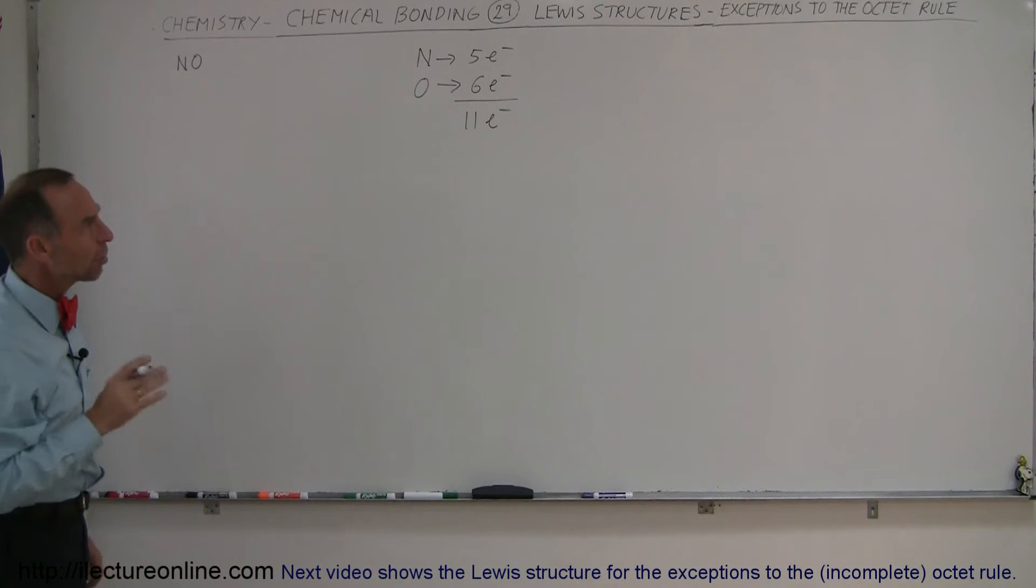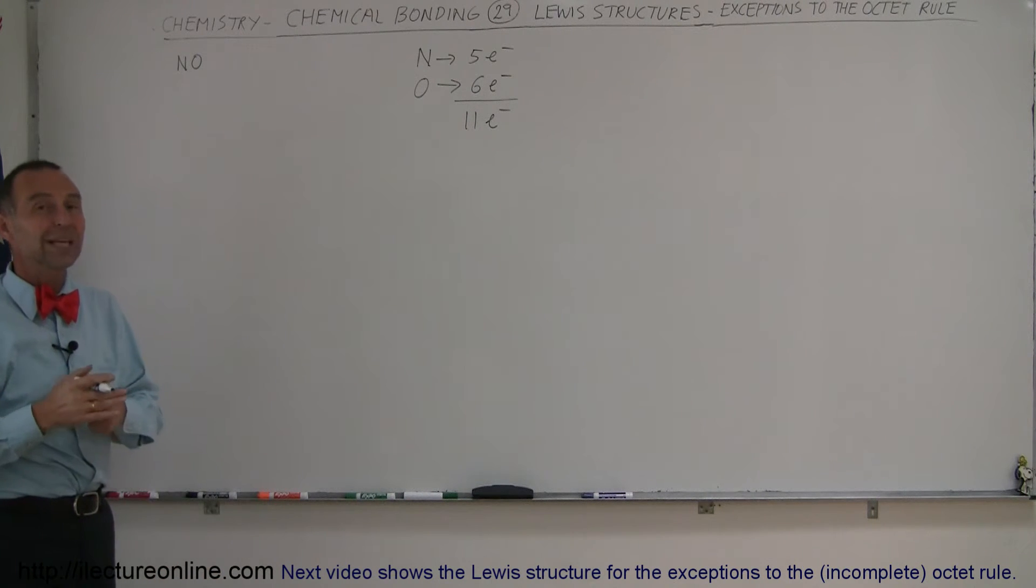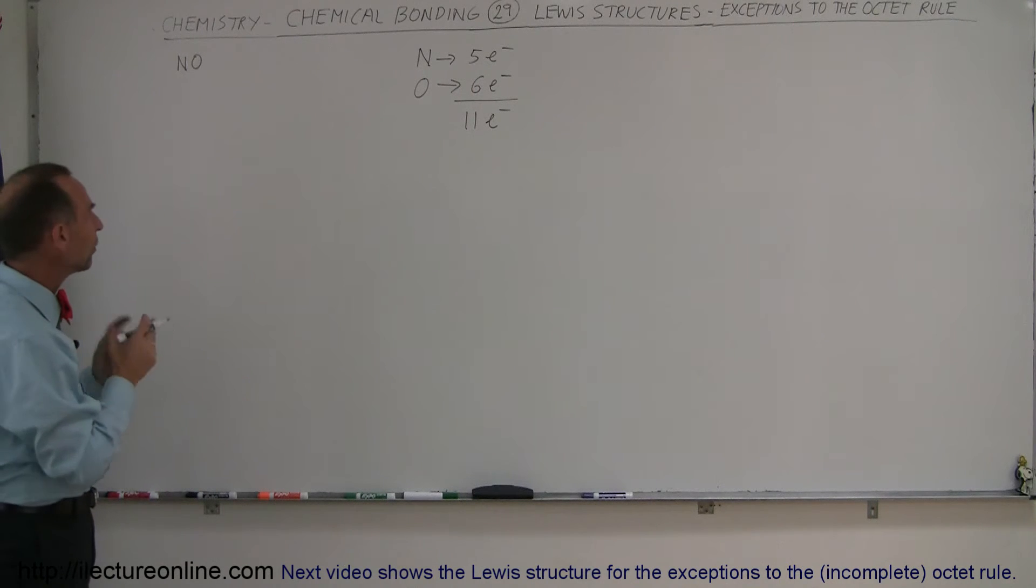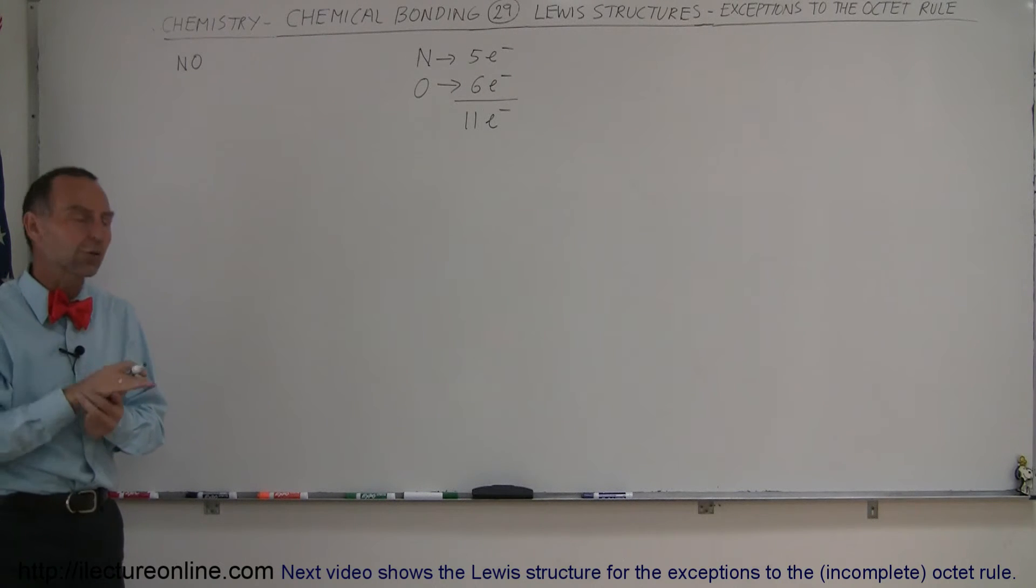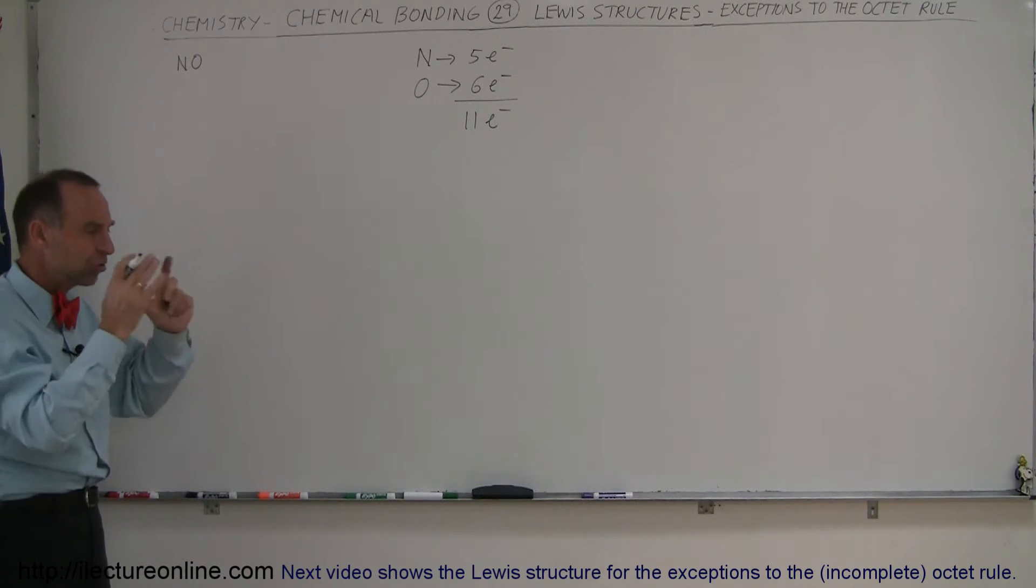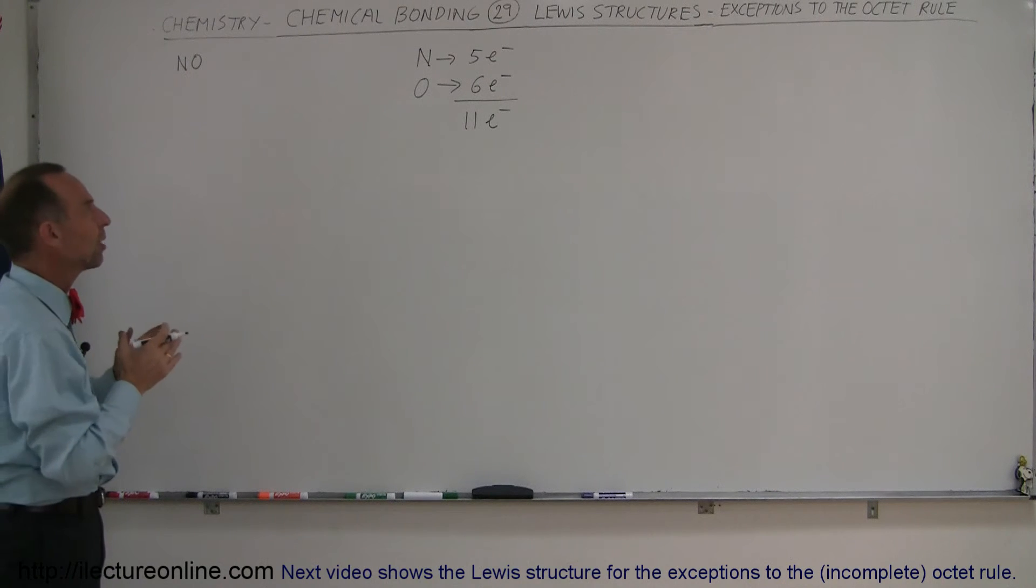Since we came up with an odd number of valence electrons you can already guess that the octet rule cannot be satisfied. So let's see what the Lewis structure of this has to look like. Well nitrogen of course has the lowest electronegativity which puts it as the central block of this molecule.